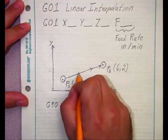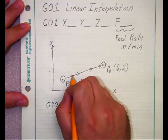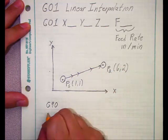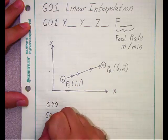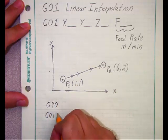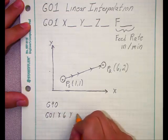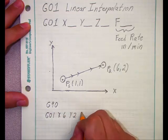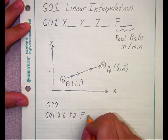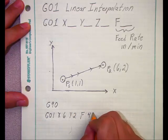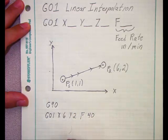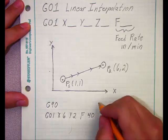So our first one, we'll call out a G90 for absolute coordinates. And of course, I want to go from P1 to P2. G01 is going to let me do that in a straight line. So then I call out G01, X6 for the end point, Y2 for the end point. And for F, I'll use the generic 40 inches per minute.